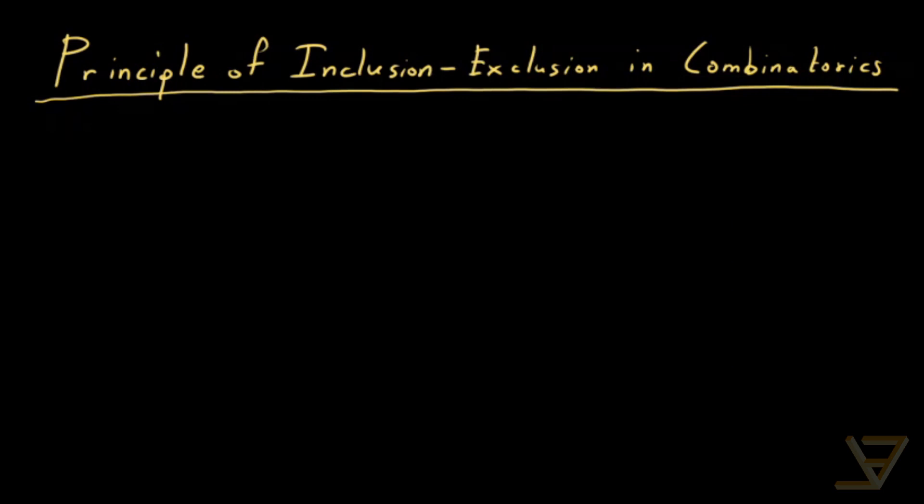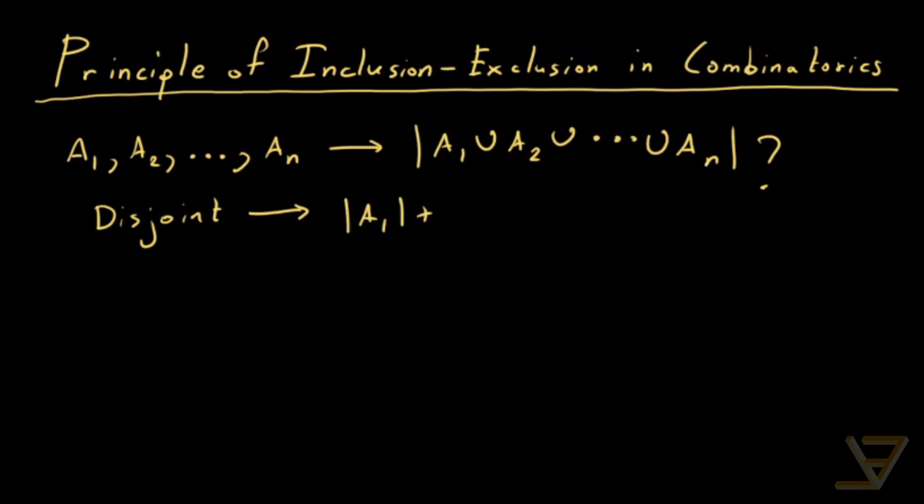The general idea is that if we have a bunch of finite sets A1, A2, all the way through to An, the question is what is the cardinality of A1 union A2 union all the way through to union An. Now if these are disjoint pairwise or mutually disjoint, then this is simply equal to the cardinality of A1 plus the cardinality of A2 all the way through to plus the cardinality of An.